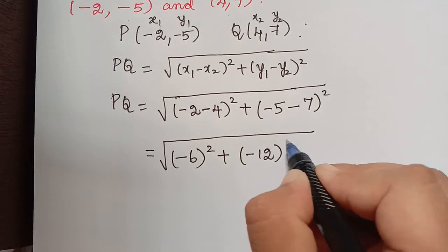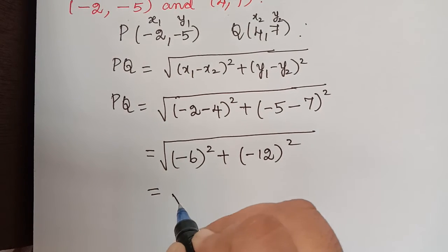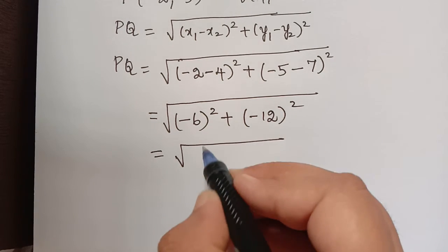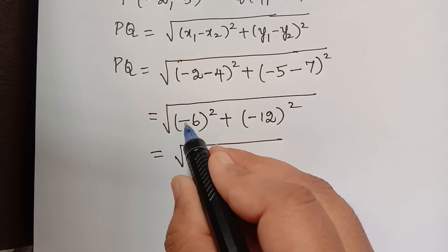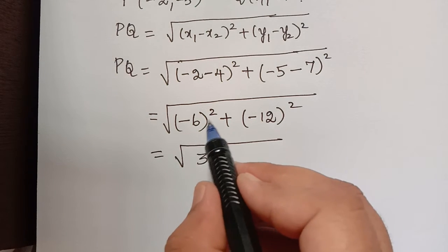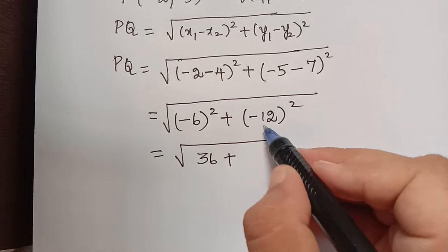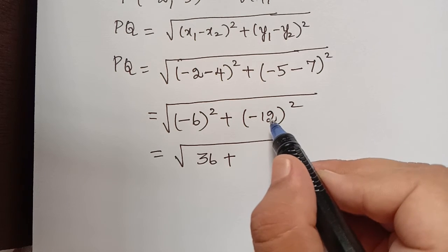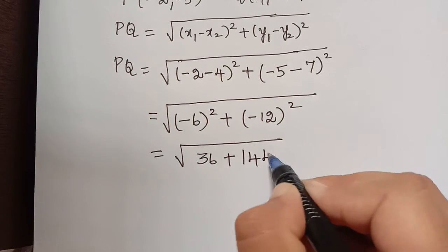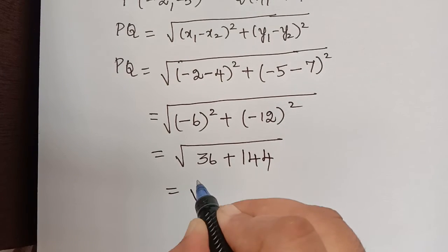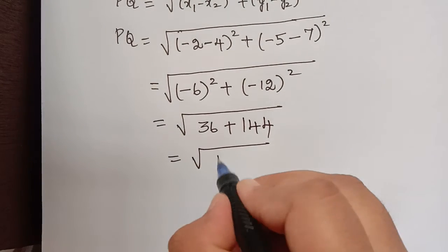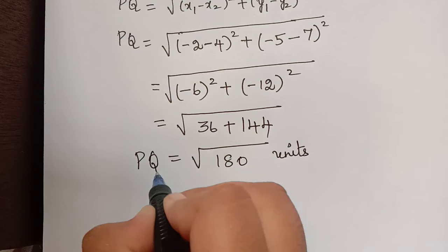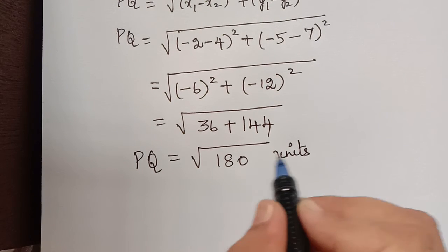Now this can be simplified further. Minus 6 the whole square: minus into minus becomes plus, so it is 6 times 6 which is 36. And minus 12 the whole square: minus into minus becomes positive, and 12 times 12 is 144. So we get square root of 36 plus 144, which is square root of 180. Therefore the distance between points P and Q is square root of 180 units.